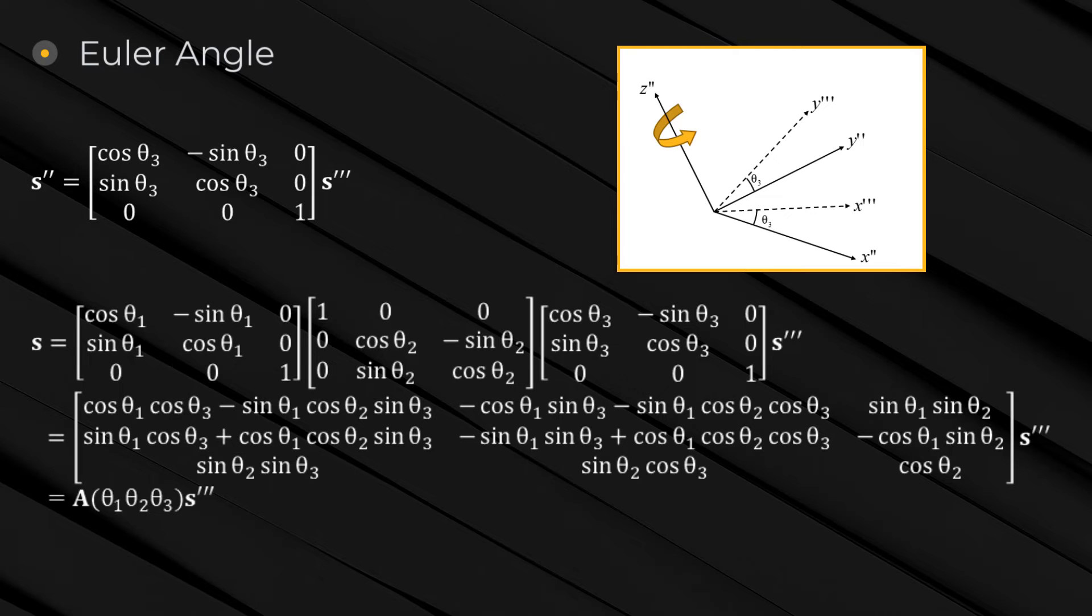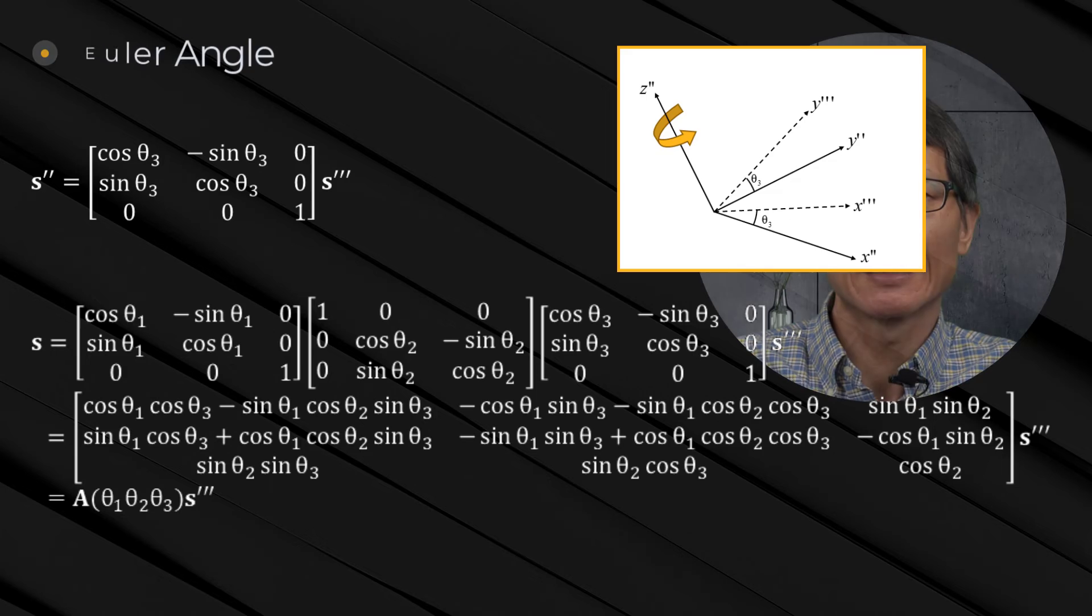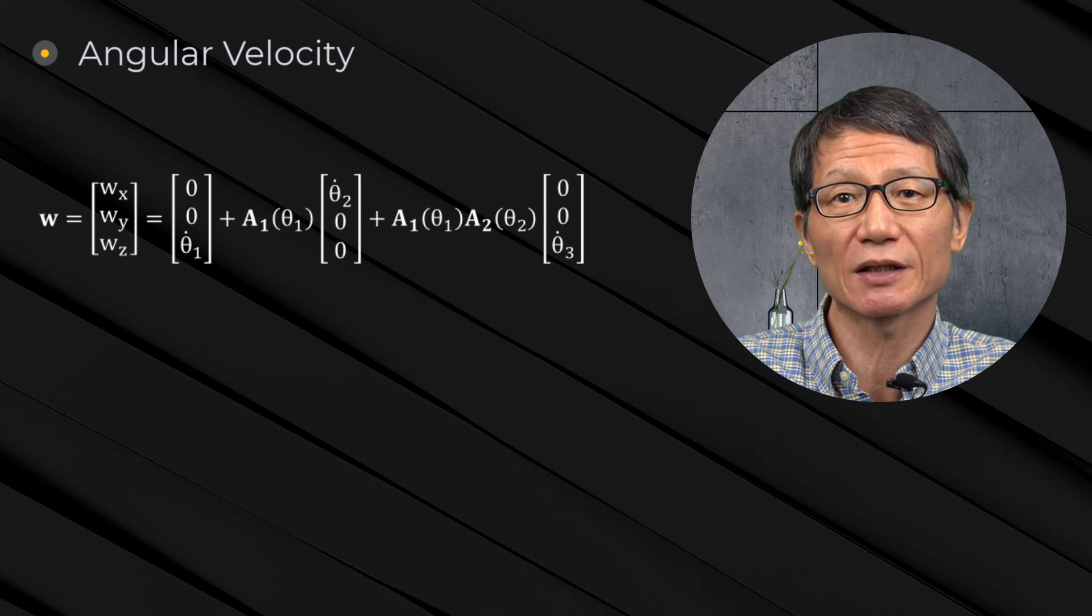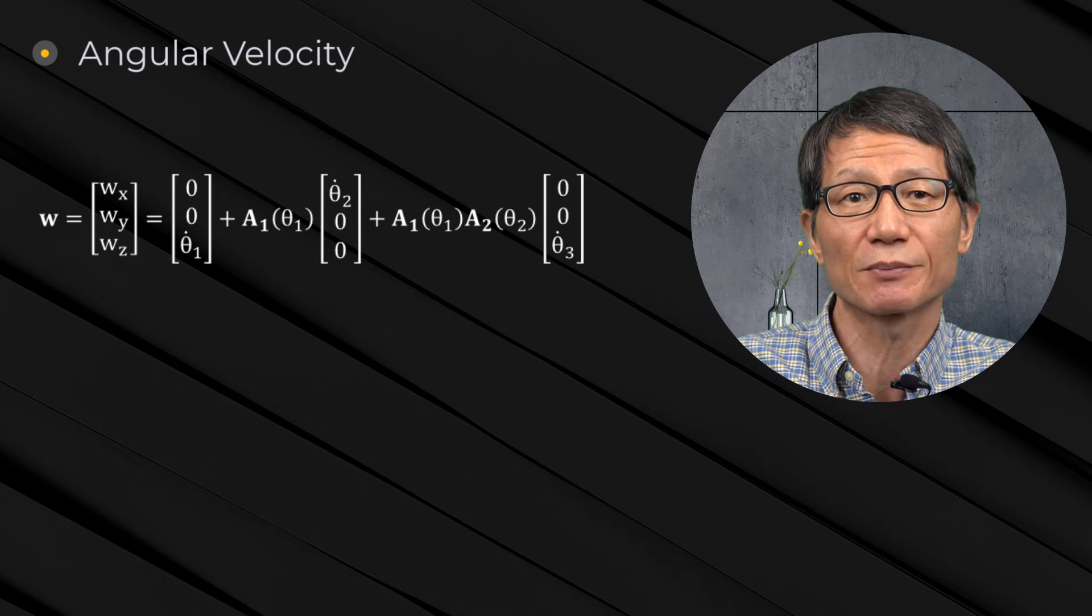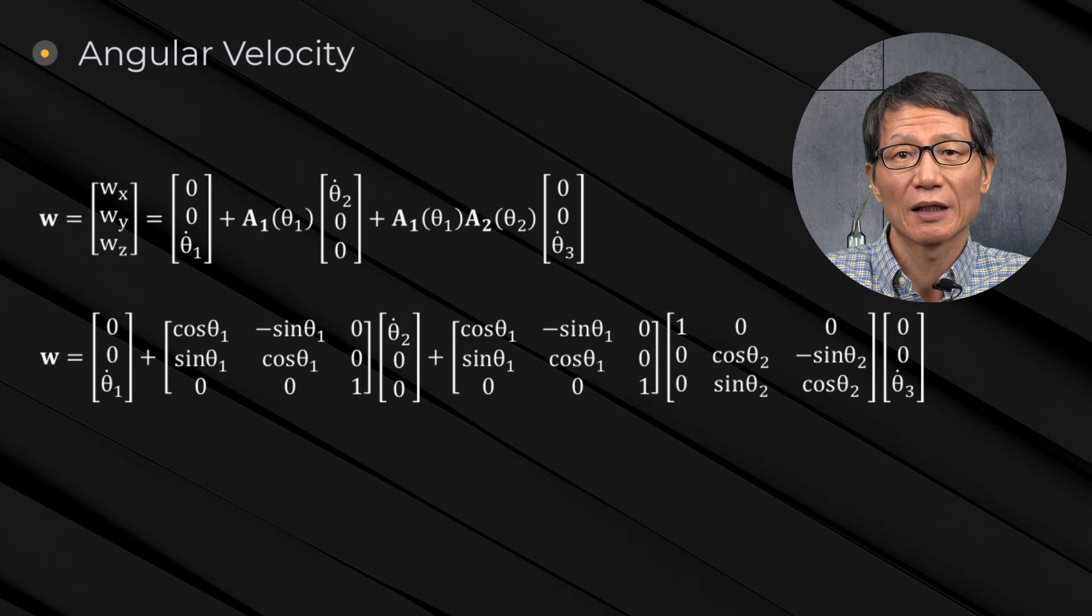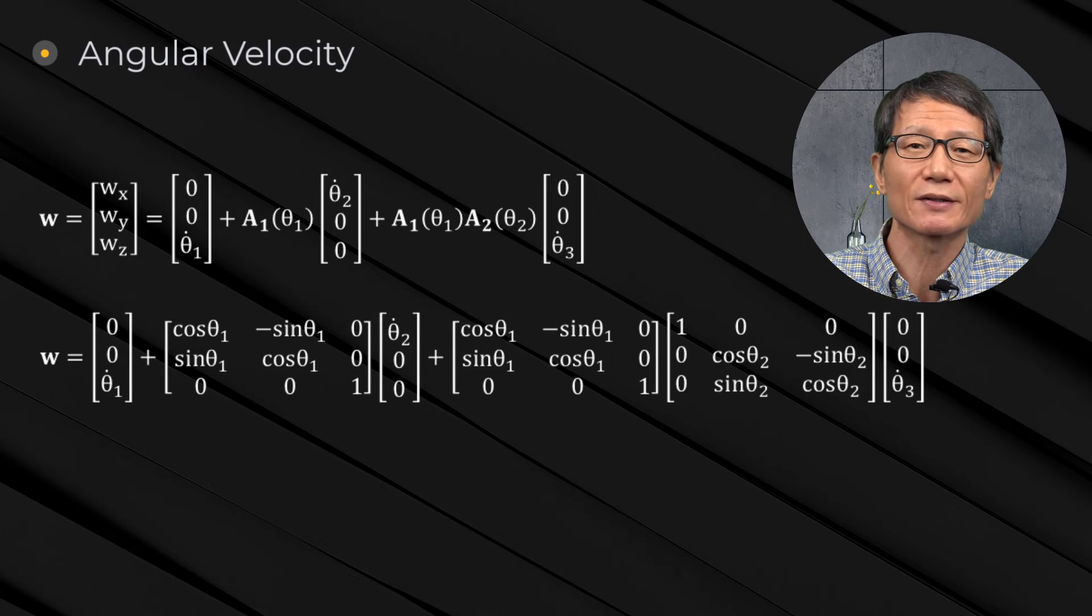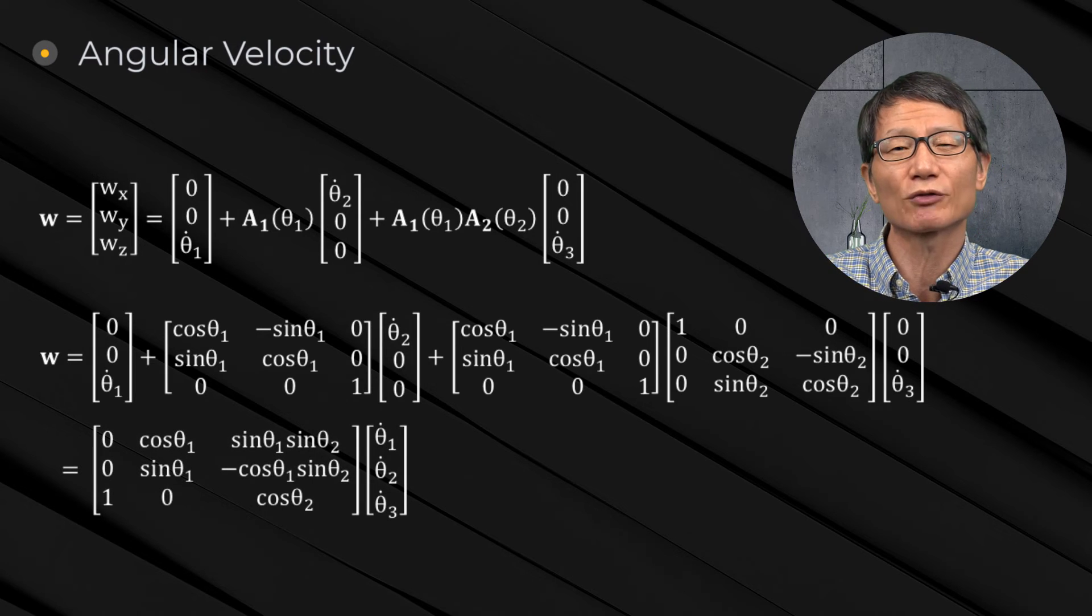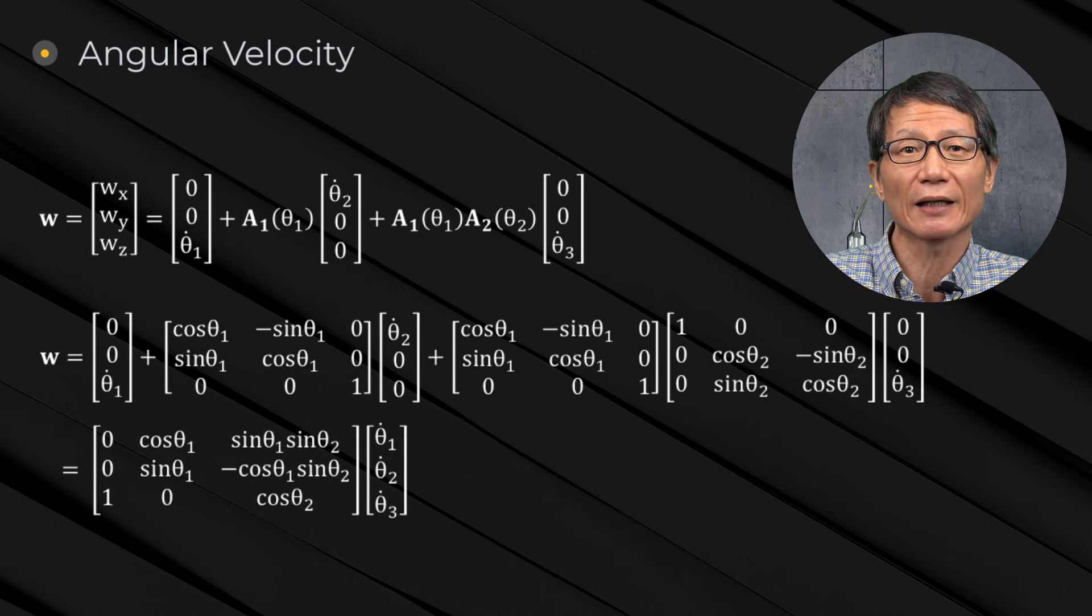The angular velocity of a body can be represented by adding up contributions of time derivatives of the three Euler angles. Since the first angle is parallel to the global z-axis, the time derivative of the first Euler angle contributes directly to the z-axis of the global frame. Since the time derivative of the second Euler angle is in the x', y', z' frame, its contribution must be transformed by the first Euler angle.